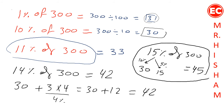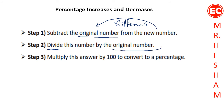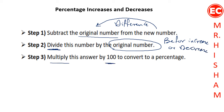For percentage of increase and decrease, there are three important steps. First, identify the original value. Then subtract to find the difference between the new number and the original. Then divide this difference by the original number, and finally multiply the answer by 100 to get the percentage.